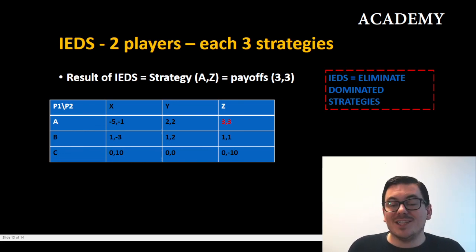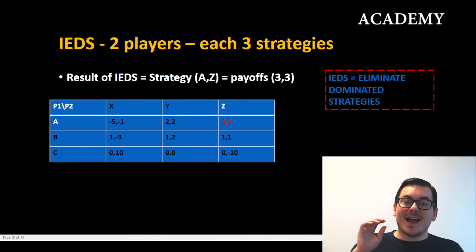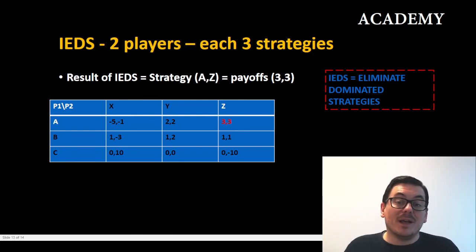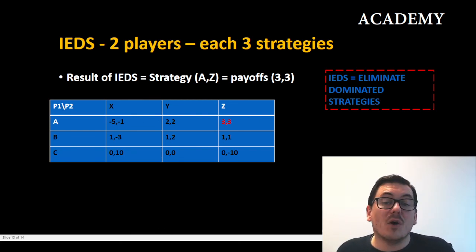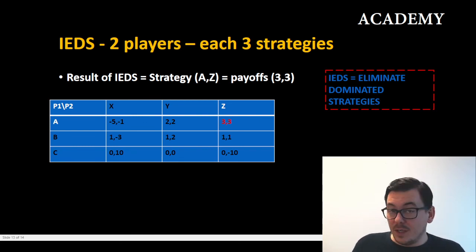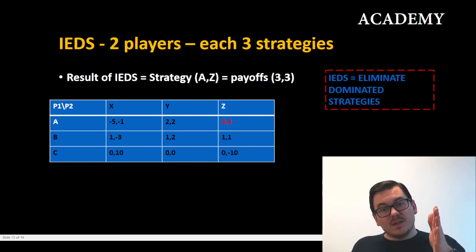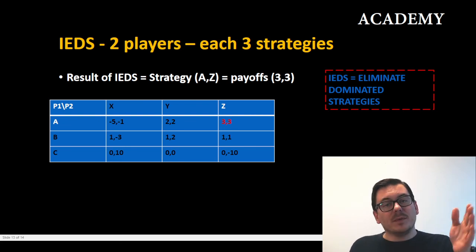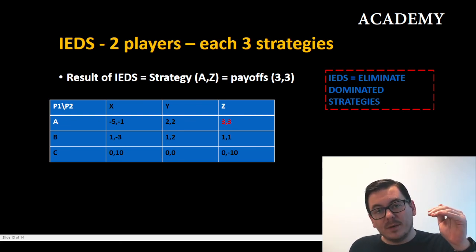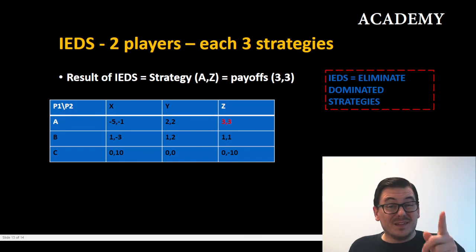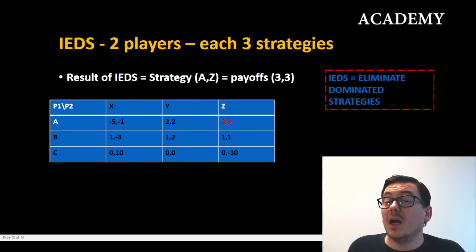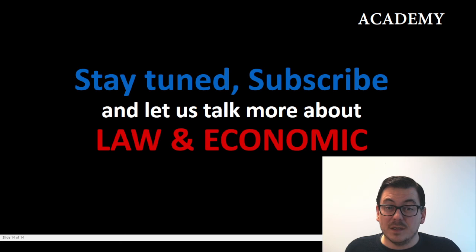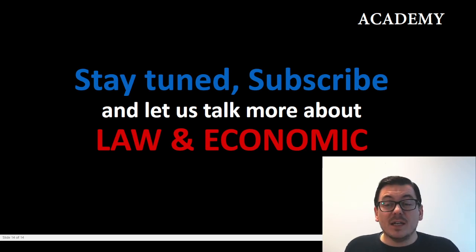Using the iterated elimination of dominated strategies, we have a result: it is strategy A and Z, giving the players payoffs of three and three respectively. This is a Nash equilibrium — a credible Nash equilibrium — found using the iterated elimination of dominated strategies. Stay tuned, subscribe to this channel, and let's talk much more about law and economics.